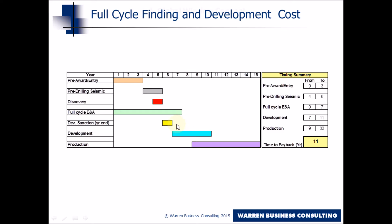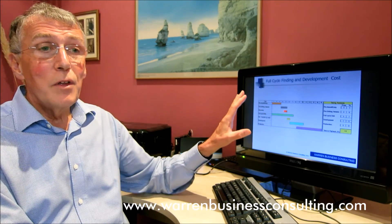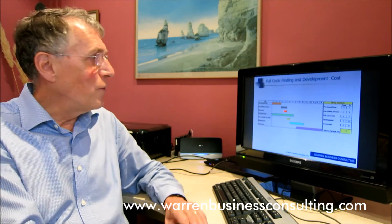Then there will be a period of development which may continue beyond the period of first production. What we're trying to capture in full cycle F&D — full cycle finding and development costs — is the true costs of the oil discovered at the point when you make the decision to develop the field.